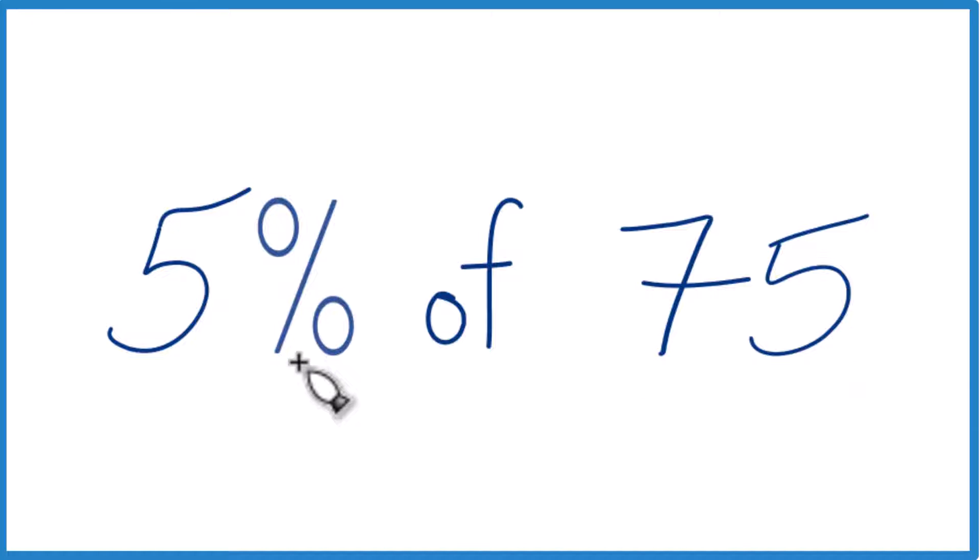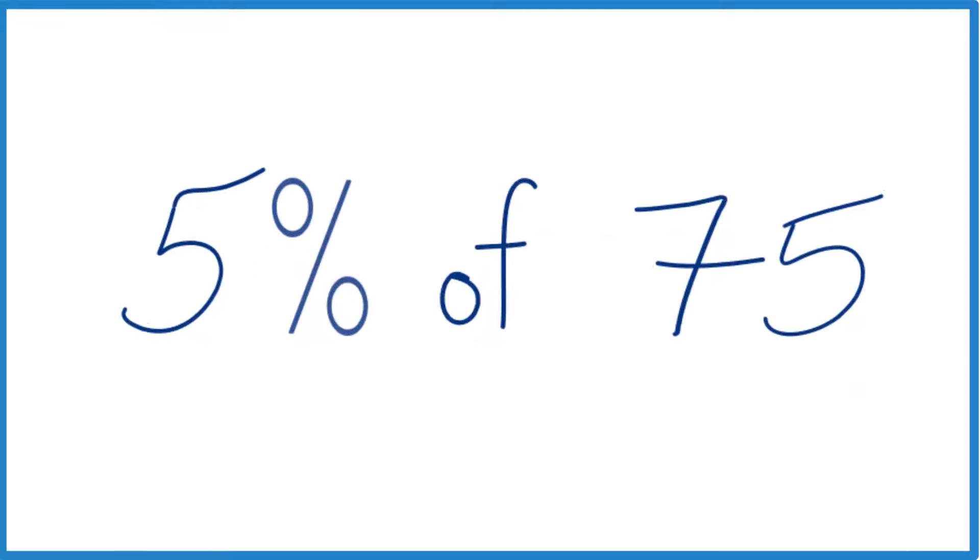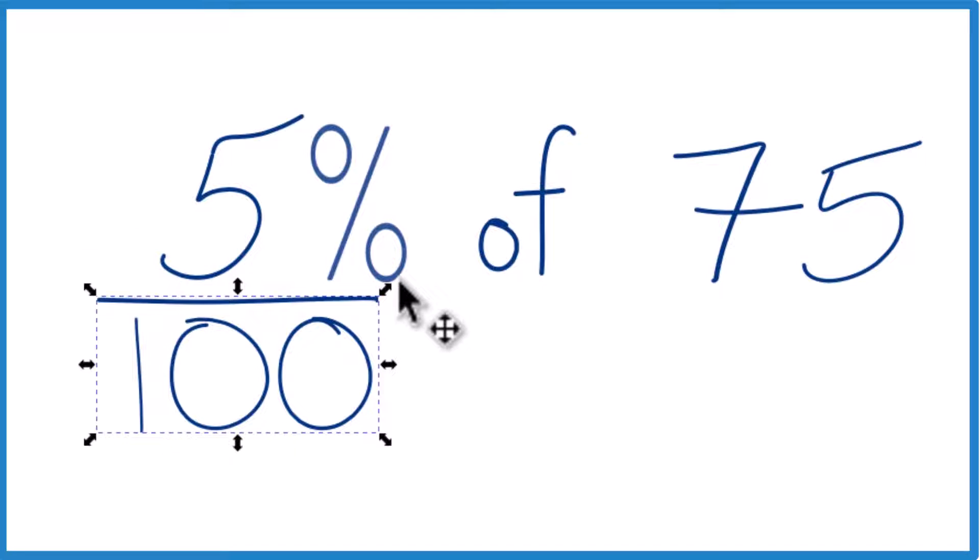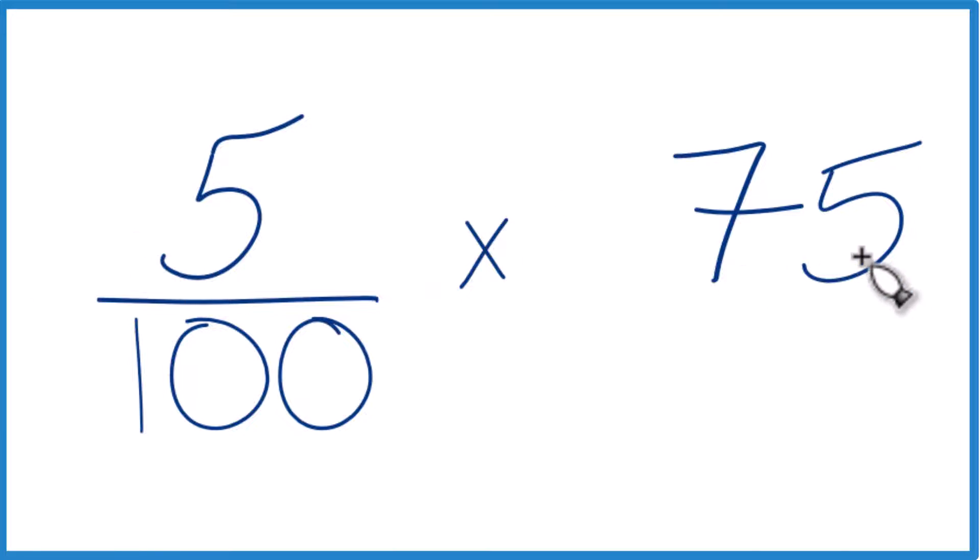Let's first think of 5%. Let's think of it as 5 over 100 because 5% is 5 per 100. So there's our 5%. And the of, let's call that multiplication. So 5 over 100 times 75.